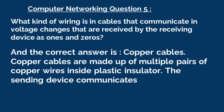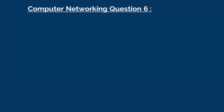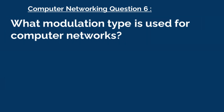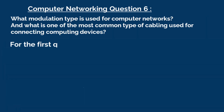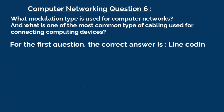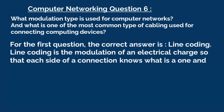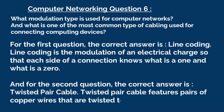The sending device communicates binary data across these copper wires by changing the voltage between two ranges. Question 6: What modulation type is used for computer networks, and what is one of the most common type of cabling used for connecting computing devices? For the first question, the correct answer is line coding. Line coding is the modulation of an electrical charge so that each side of a connection knows what is a 1 and what is a 0. For the second question, the correct answer is twisted pair cable. Twisted pair cable features pairs of copper wires that are twisted together.